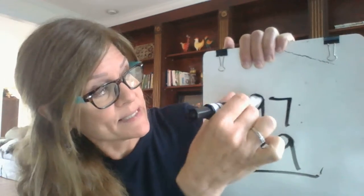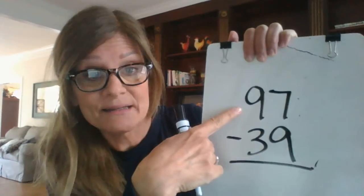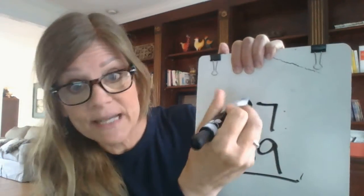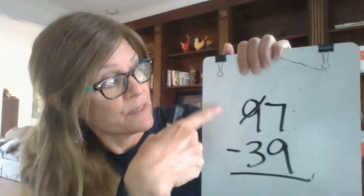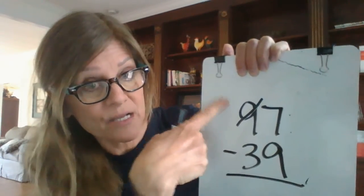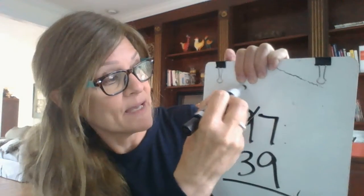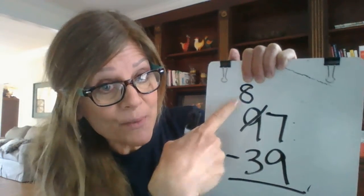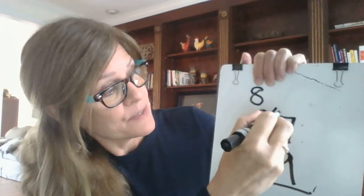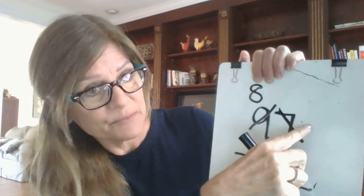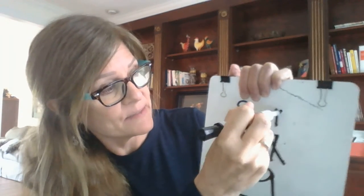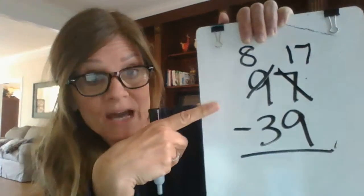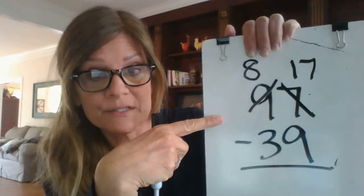Again, we're going to go over to the tens column. Ninety-seven. Ninety-seven has nine tens. We're going to take one of those away. We're going to borrow it. So if I have nine tens and I take one away, I'm going to have eight tens left. What am I going to do with the ten that I just took away? I'm going to add it to my ones column. So the seven, seven plus ten, is seventeen.